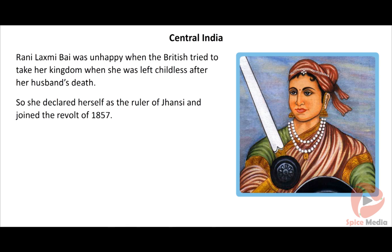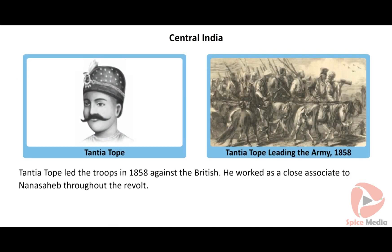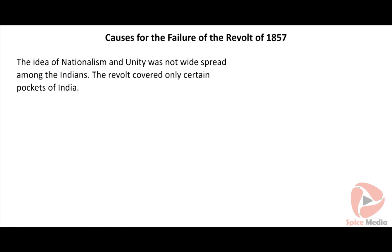Tatya Tope's father was a noble at the court of Maratha Peshwa Baji Rao. Tatya Tope developed friendship with Nana Sahib, the adopted son of the Peshwa. He was a close associate of Nana Sahib in the freedom struggle and led the army in 1858 against the British.